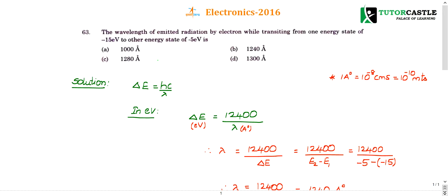Question number 63. The wavelength of emitted radiation by an electron while transiting from one energy state of minus 15 electron volts to another energy state of minus 5 electron volts is how much?